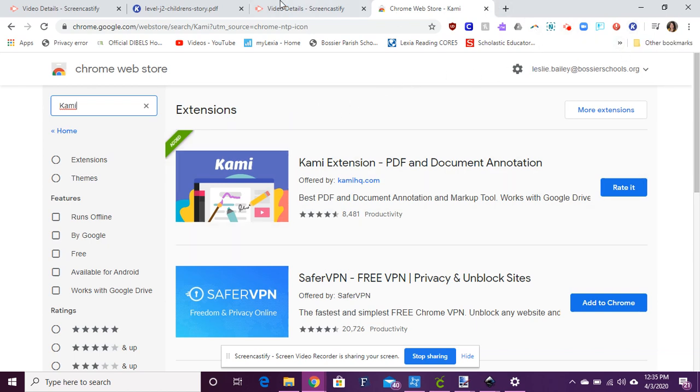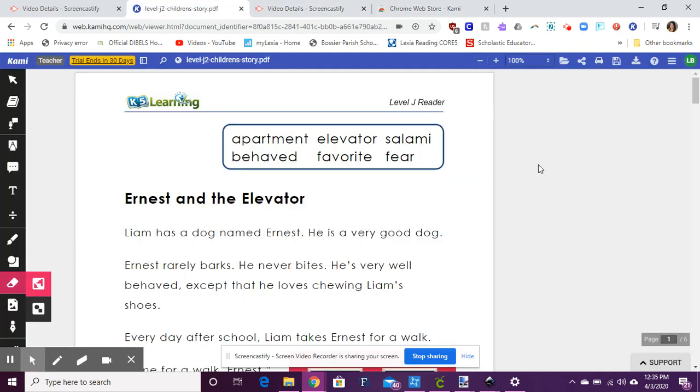Okay so I'm going to go to a document real quick in Kami. Now you will have access to it through your Google Classroom so you don't ever have to go through it up here in your toolbox. You'll just open it in Google Classroom. Okay so let me talk to you about some of these neat tools over here that you can use.